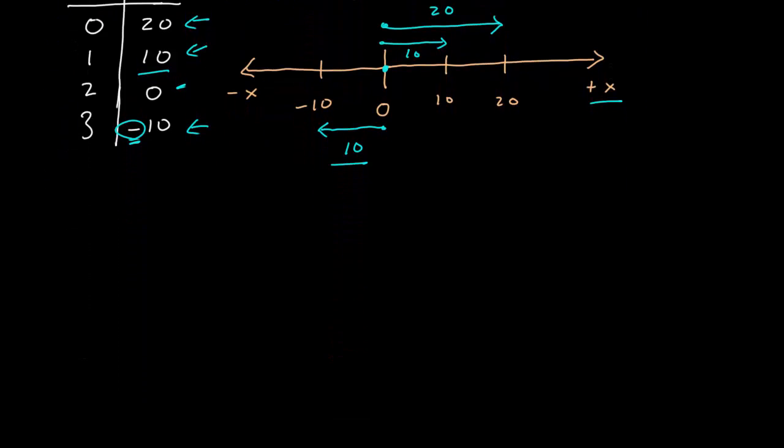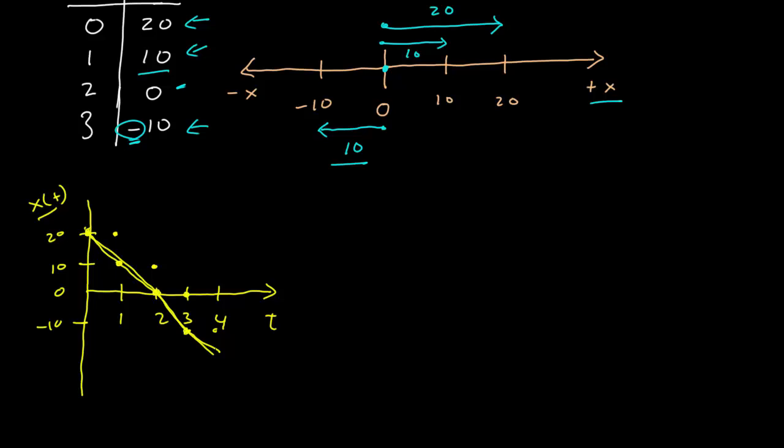Just to complete our picture looking at the different representations, let's look at a graphical representation. 0 is 20, 1 is at 10, 2 is at 0, 3 is at negative 10. And so I have a sort of straight line through those four points. And so this is now a graphical representation of this mathematical function.